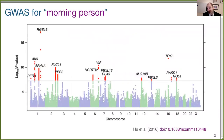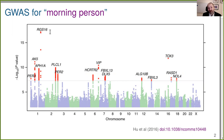Genome-wide association studies have been huge for human genetics. This figure is from a 23andMe study showing association between markers across the genome and self-report of being a morning person. Quite a number of genes show really strong association.